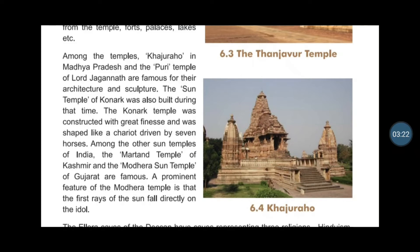The Sun Temple of Konark was also built during that time. The Konark temple was constructed with great finesse and was shaped like a chariot driven by seven horses. Among the other sun temples of India, the Martand temple of Kashmir and the Modera Sun Temple of Gujarat are also famous.